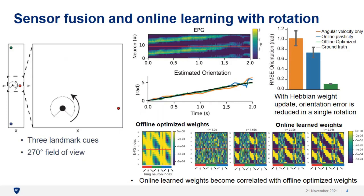To start with, we investigate how this cell type connectivity constrained network performs in the simplest case of rotation. We simulate visual input with three visual cues at different distances. In our model, the simulated visual field is 270 degrees and a population of visual encoding neurons have tiled receptive fields for each of the different visual cues. With rotation, the bump of activity moves as the orientation changes, and the orientation can be decoded from this bump of activity, which we compare for several network variants.